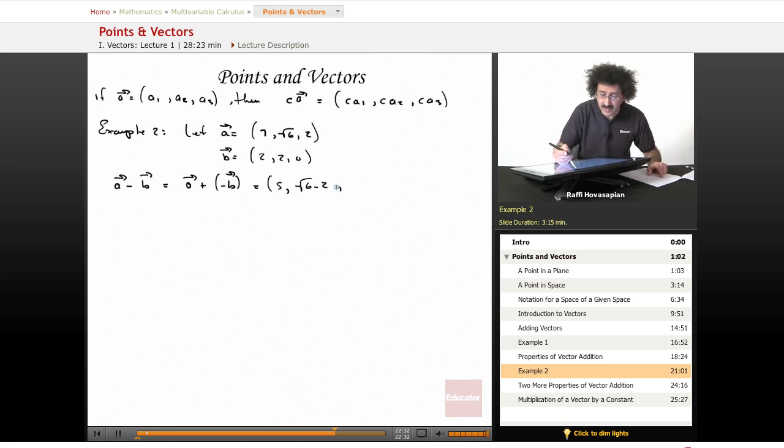Well, how about if we do 7 times A, like we said? Well, 7 times A, A is 7, radical 6, and 2. It just means take 7 and multiply each of those components by 7. So we get 49, we get 7 radical 6, and we get 14. That's it.